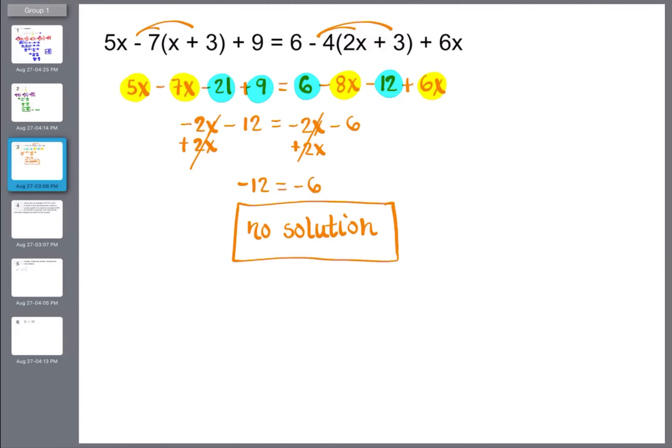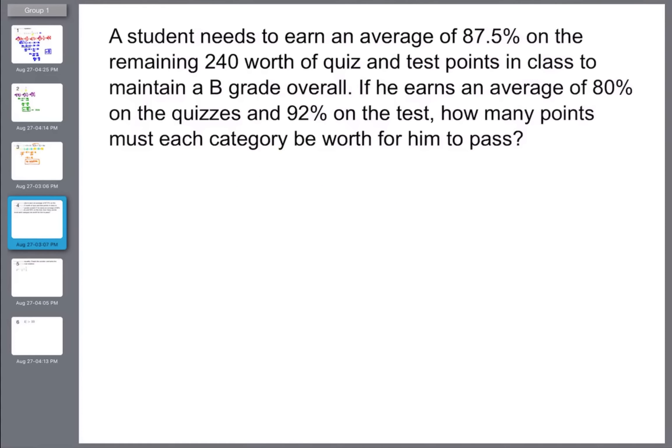So our answer is simply no solution. If you were to be asked what type of equation this is, it's called a contradiction. All right. So then if we take a look at some word problems, we're going to do one of those now. When we look at this one, we have a student needing to earn an average of 87.5% on the remaining 240 points. So this is the total amount that they need percent out of the total points. And then we have the class broken up into two categories, which are quizzes and tests. So if we take a look, he has 80% on quizzes. And then we have 92% on the remaining tests.